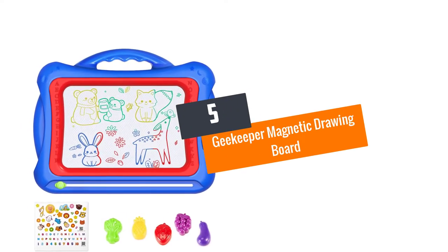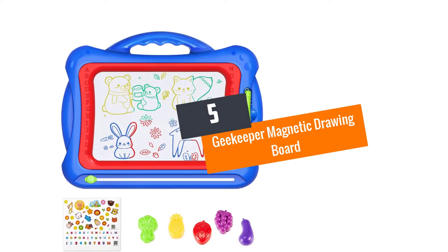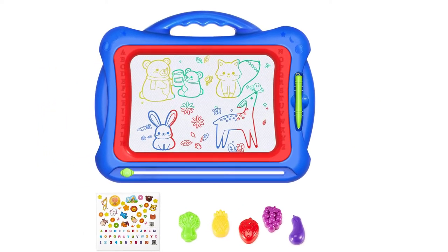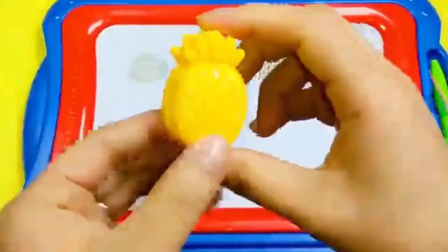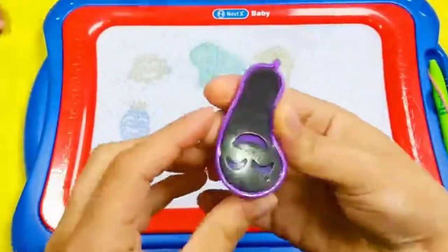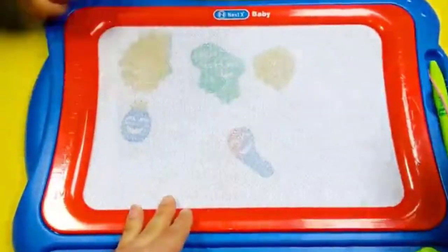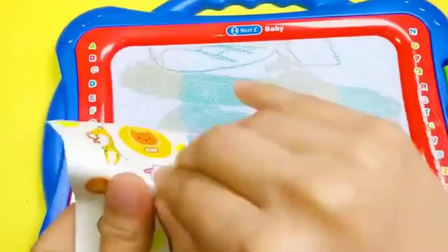Number five: Geekkeeper magnetic drawing board. A lot of thought has been given in the design of this product. The board comes with rounded edges so it does not hurt your child's soft skin in any manner. Next, a handle is added to the board to make carrying easier. Besides, the handle has creases which mold to the shape of the fingers, giving an ergonomic hold.